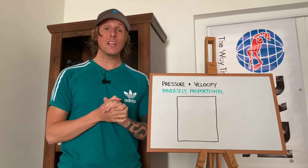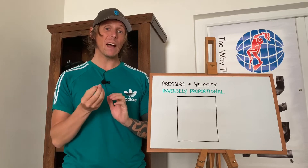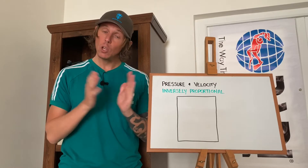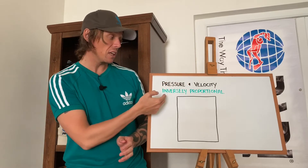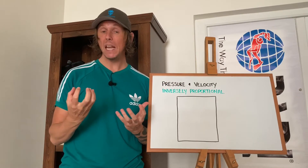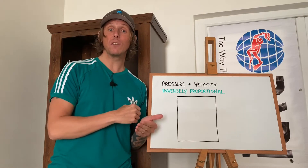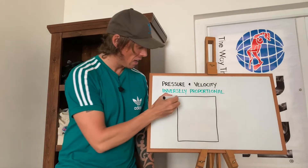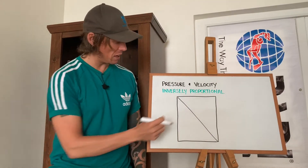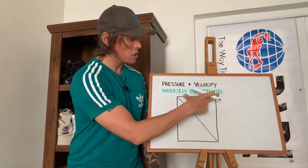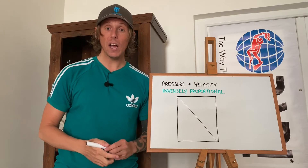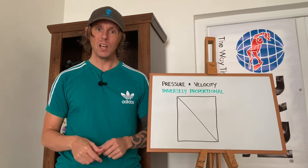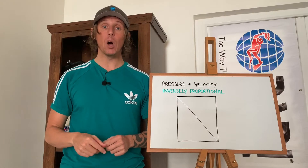The Venturi effect — we just need to understand one basic property, and if we can get our heads around that, it should make all of the subsequent information a lot easier to understand. So what is that principle? Pressure and velocity are inversely proportional to one another. As you increase one, you decrease the other. There is a relationship that exists between pressure and velocity.